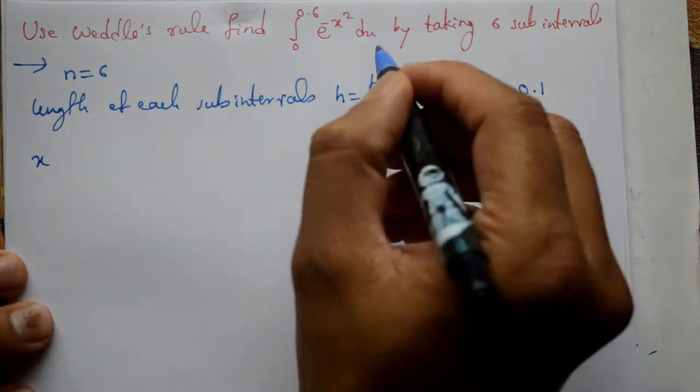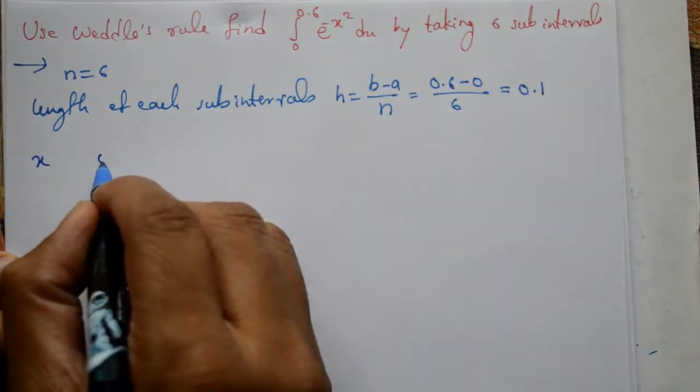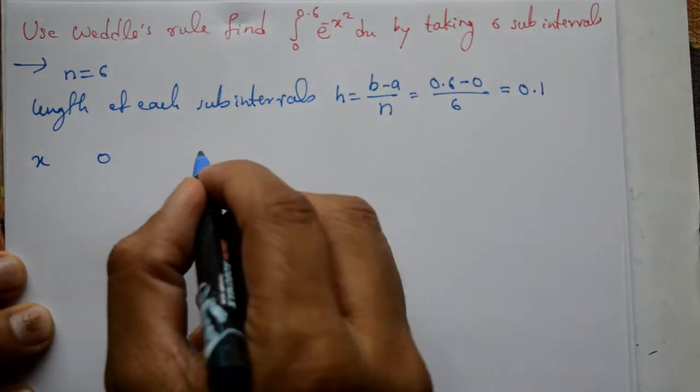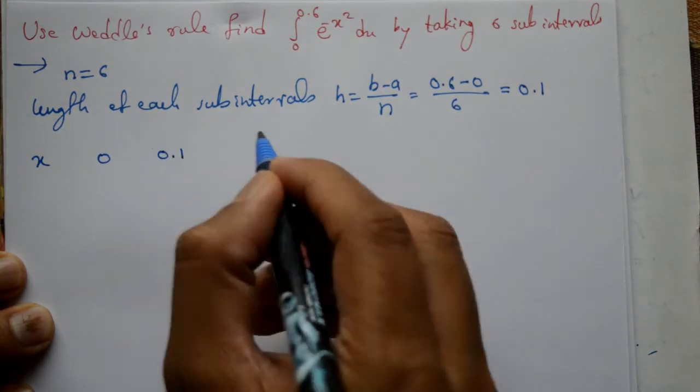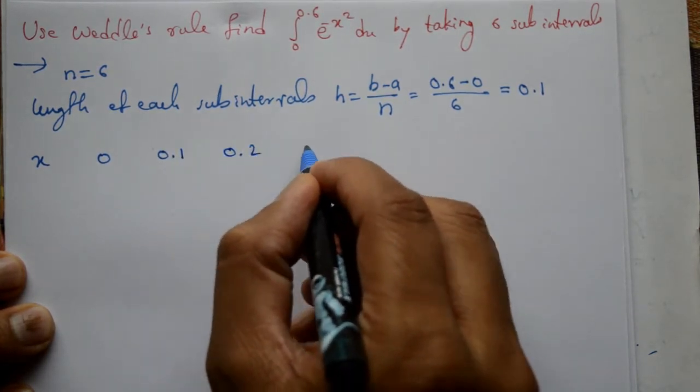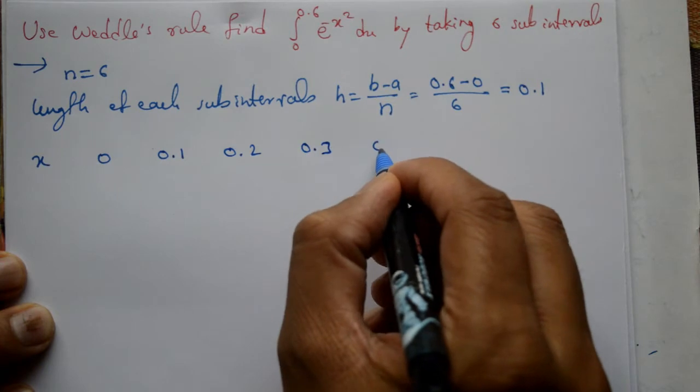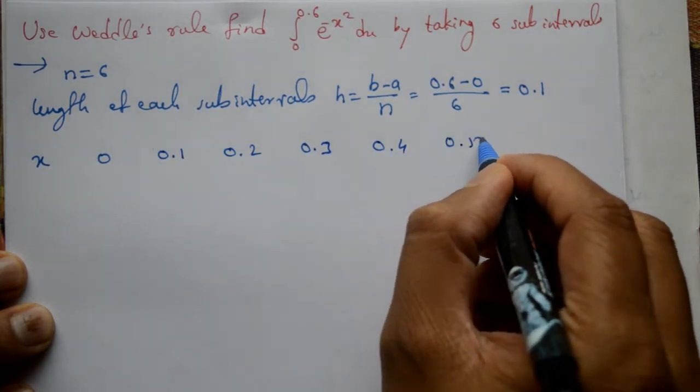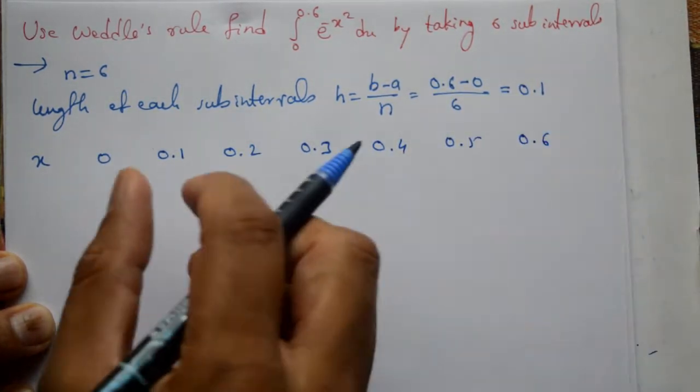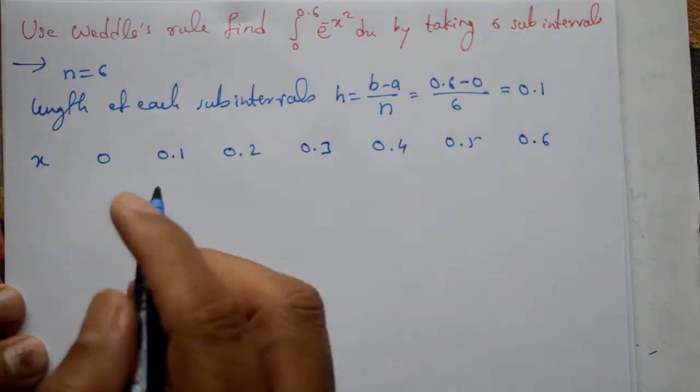So we have x values: 0, then 0.1, 0.2, 0.3, 0.4, 0.5, and 0.6. The distance between each is 0.1.